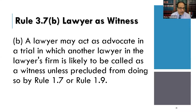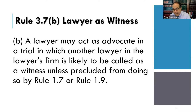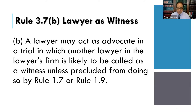Under Rule 3.7(B), a lawyer may act as an advocate in a trial in which another lawyer in the lawyer's firm is likely to be called as a witness, unless precluded from doing so by Rules 1.7 or 1.9 — the conflicts of interest rules. For example, you don't want to be a witness in a case where you'd have to say unfavorable things about your boss, which could be a material limitation under 1.7. If you're going to have to take the stand, another lawyer from your office can take over the case.